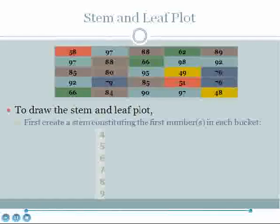In this case, we have values in the 40s, 50s, 60s, 70s, 80s, and 90s, so there are four numbers in the stem.